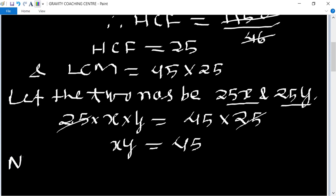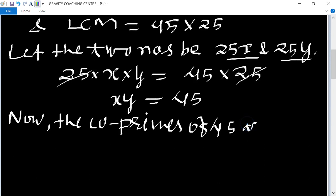So now we find the coprimes of 45. The coprimes of 45 are 45 and 1, and 9 and 5.